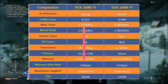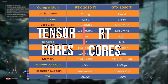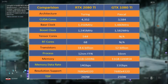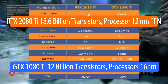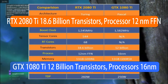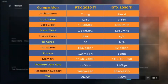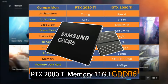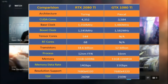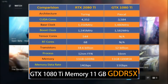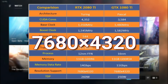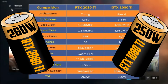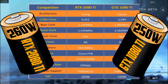The new Tensor cores and RT cores were not present in old Pascal-based GPUs — we will discuss those further in this video. The RTX 2080 Ti has 18.6 billion transistors compared to 12 billion in the 1080 Ti. Processor size is 12nm versus 16nm. The RTX 2080 Ti uses new GDDR6 memory with a speed of 14 Gbps, significantly faster than the old GDDR5 memory, while the 1080 Ti uses 11 Gbps GDDR5X memory. Both support 8K resolution gaming. Power consumption is 260W for the RTX 2080 Ti and 250W for the 1080 Ti.